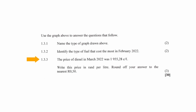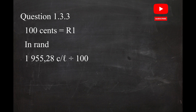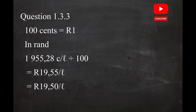In question 1.3.3, the price of diesel in March 2022 was 1,955.28 cents per litre. You have to write this price in Rand per litre rounded to the nearest 50 cents. Since there are 100 cents in 1 Rand, 1,955.28 cents divided by 100 equals R19.5528 per litre, which rounds to the nearest 50 cents as R19.50 per litre.